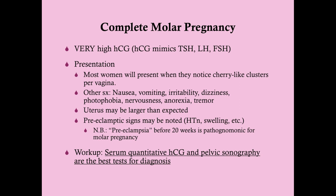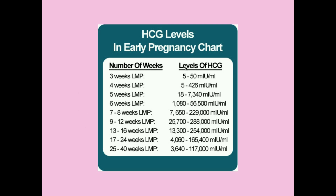To work up a suspected molar pregnancy, you want to get a quantitative HCG. The difference from a qualitative HCG is that qualitative only tells you positive or negative, but we want to know how much HCG is present, because there is a range expected in a singleton pregnancy based on gestational age. If the level is way above what's expected for her weeks, that points toward a complete molar pregnancy. The next best test is pelvic sonography, which will show very characteristic findings.